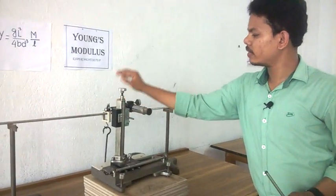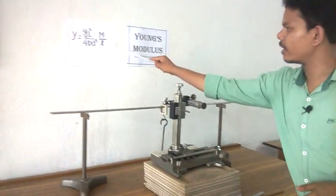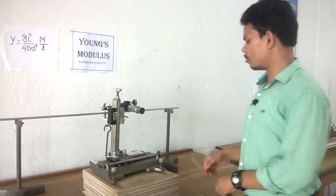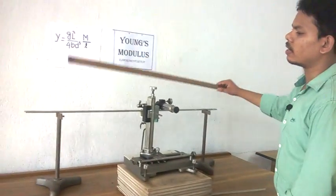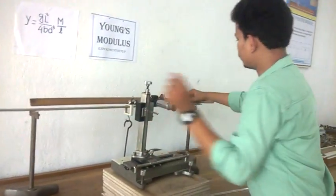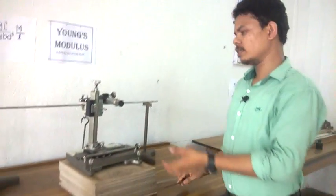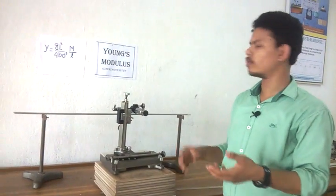So this slight downward change is called depression, that is δ corresponding to mass m. First, how to measure the value of L. Very simple: measure with a scale and take the measurement from this end to this end. I will explain - this is 80.1 cm, so this is our L. You have to take several readings, 3 or 4 times.